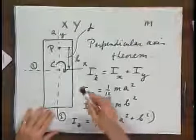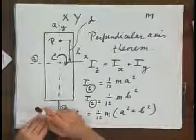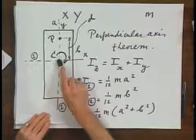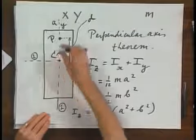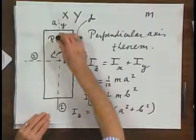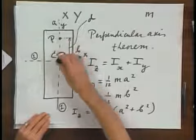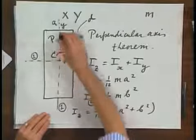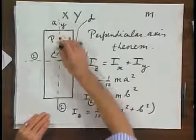Now, you guessed it. I already know the moment of inertia about C. If I want to know the moment of inertia about the axis point P, and these two axes are parallel, now I can apply the parallel axis theorem again.